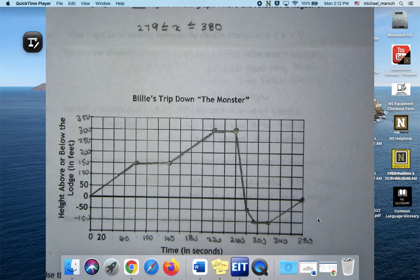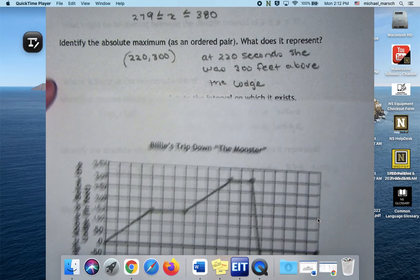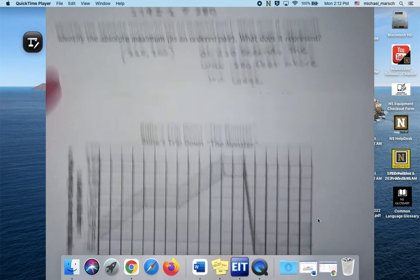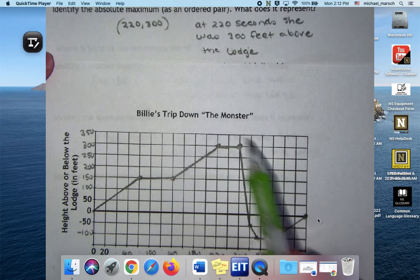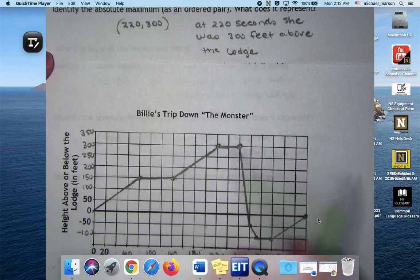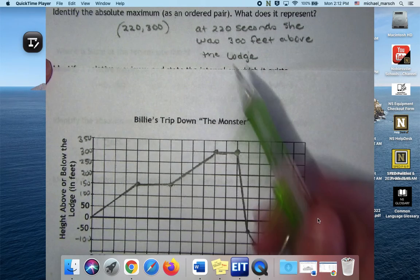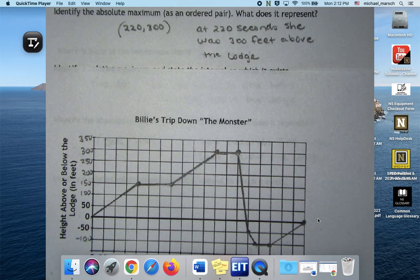Absolute maximum, I just picked 220, 300 because it's up in this region here. You could have picked any ordered pair that would represent this area of the graph. And then what does it mean? At 220 seconds she was 300 feet above the lodge, right?